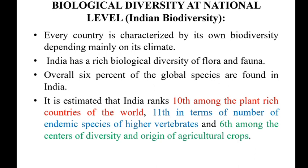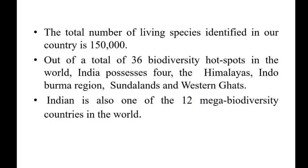India holds the 6th position among centers of diversity and origin of agricultural crops. Center of origin means crops that first originated in India and were later distributed to other nations. The total number of living species identified in India is 1,50,000. Out of the total 36 biodiversity hotspots worldwide, 4 hotspots are distributed in India.